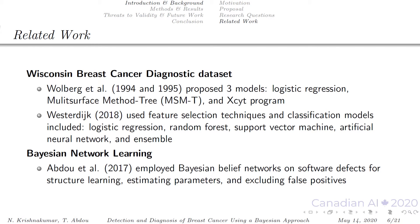In the related work, we briefly introduced the works and later we'll look at models mentioned in the works in the results section. Using the Wisconsin breast cancer diagnostic dataset, Wolberg and his colleagues proposed three models — logistic regression, multi-surface method tree, and EXIST program — for the classification of benign and malignant cancer. Westerdeg also used this dataset with various feature selection methods and classification models. Abdou and his colleagues employed Bayesian belief networks on software defects for structure learning, estimating parameters and excluding false positives, which we integrate into our research.